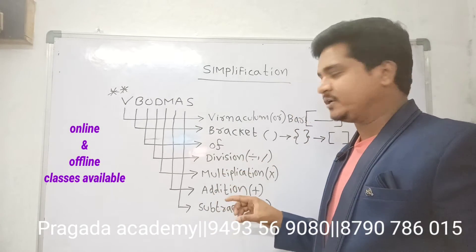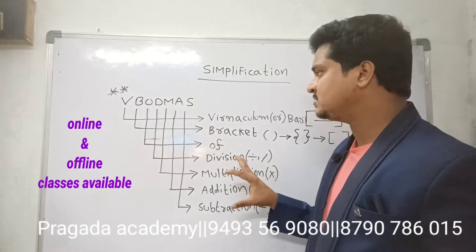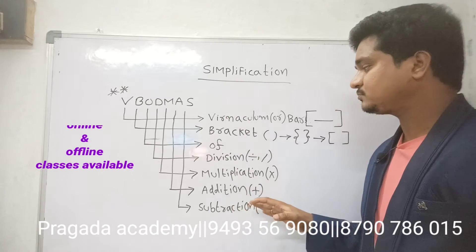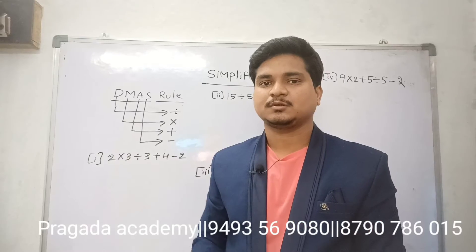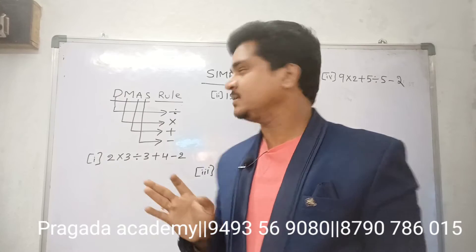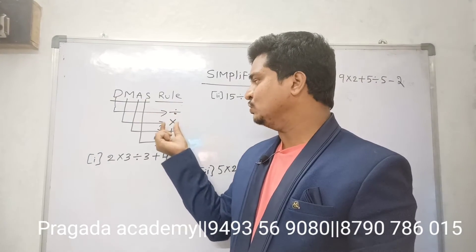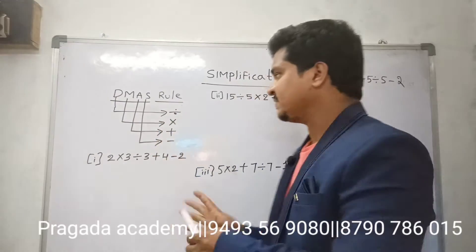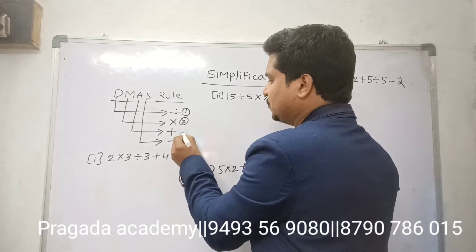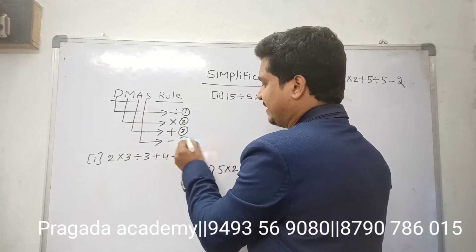The DMAS rule is very important for simplification in simpler problems. If they mention V, B, O, you apply the VBODMAS rule. Using the DMAS rule I will explain a few examples. D for division, then multiplication (×), then plus, then minus.